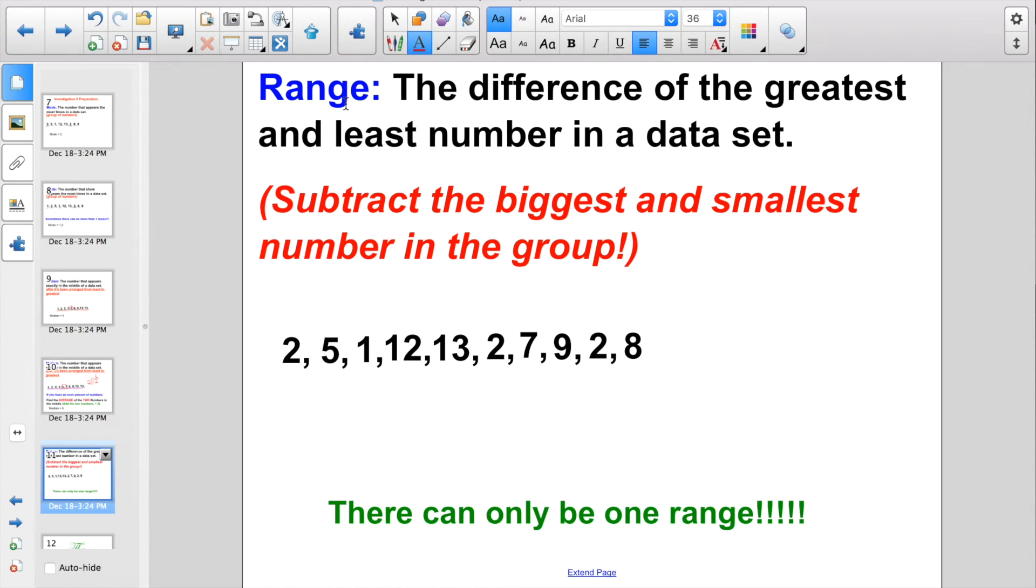And our last one today before we get into Socrative is the range. And the range is the difference of the greatest and the least number in a data set. Basically just means subtract the biggest and the smallest number in the group. So what is the biggest number that I have here in the group? Do you see it? I think it's right here with 13. What is my smallest number in the group? That's going to be right here with 1. So again, 13 is my largest number in that data set. 1 is my smallest number in the data set. To find the range, you just subtract the biggest and the smallest number in the data set. 13 minus 1. That's easy enough. That's 12. And there will only be one range every time.